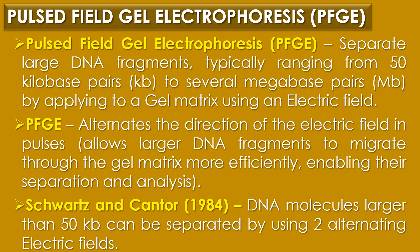This alternation allows larger DNA fragments to migrate through the gel matrix more efficiently, enabling their separation and analysis. Regarding the discovery, in 1984 Schwartz and Cantor introduced the concept that DNA molecules larger than 50 kb can be separated by using two alternating electric fields.